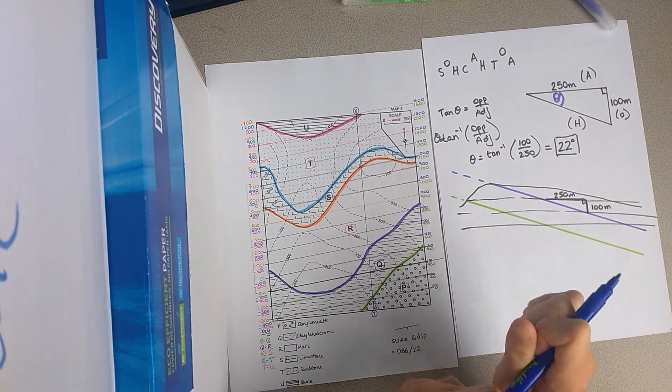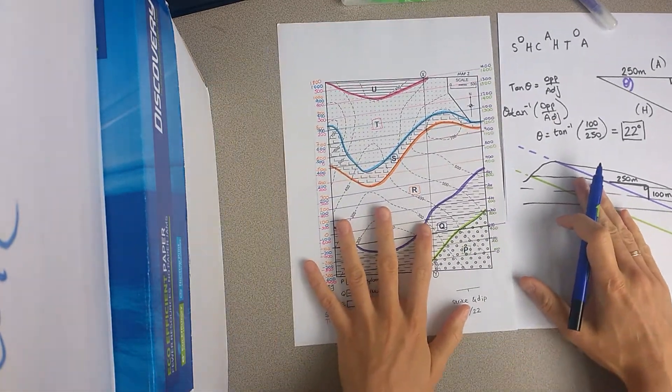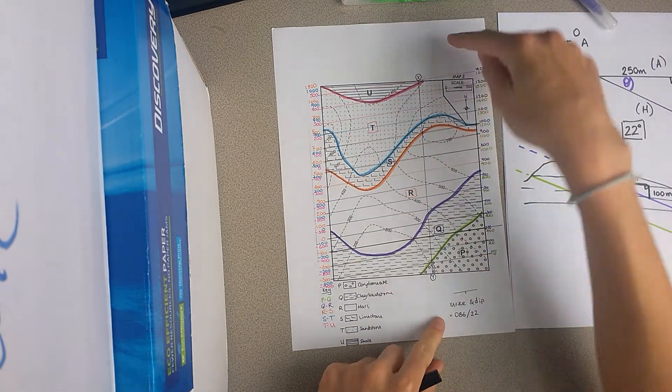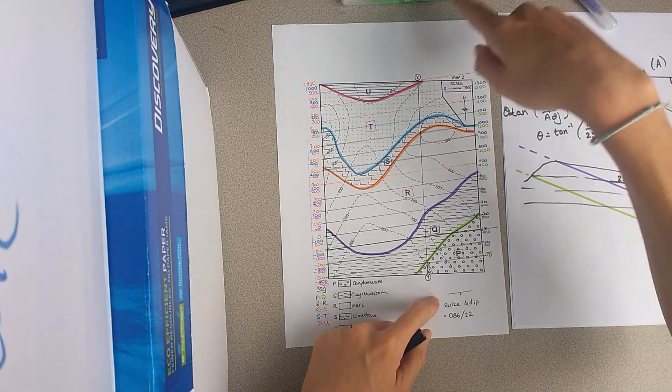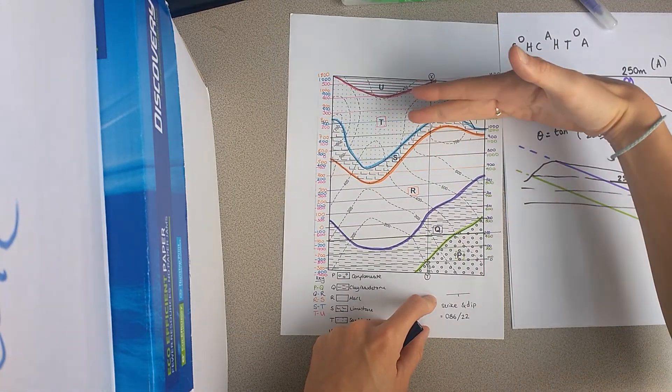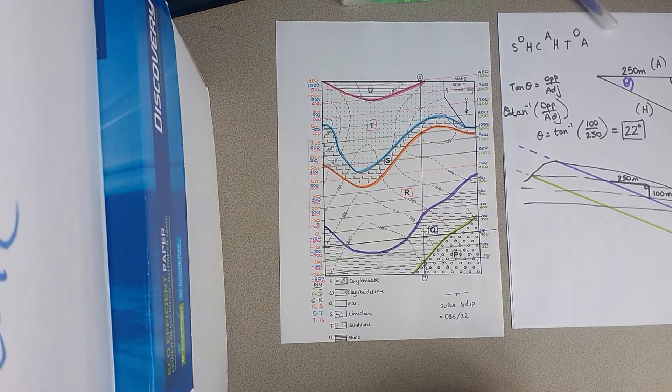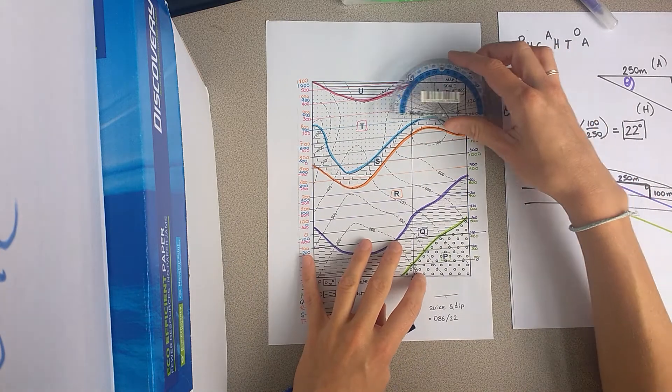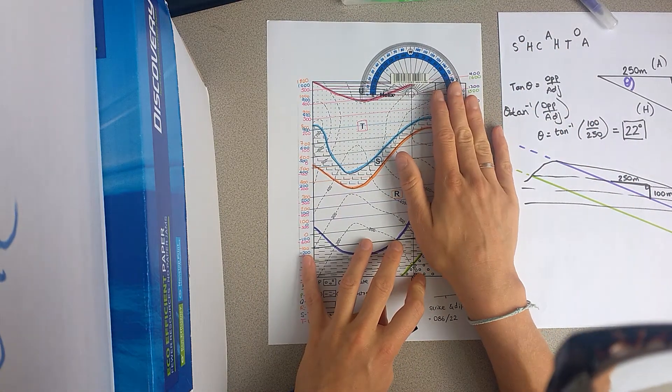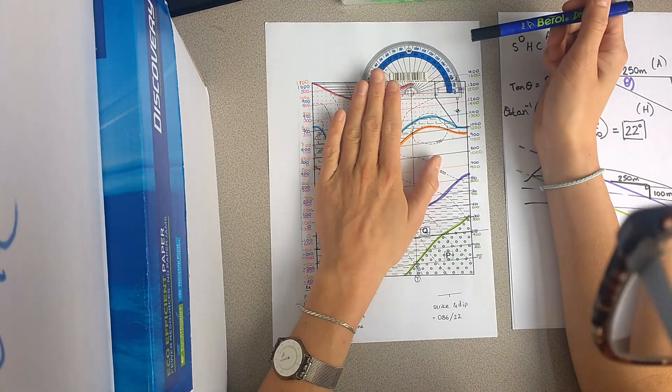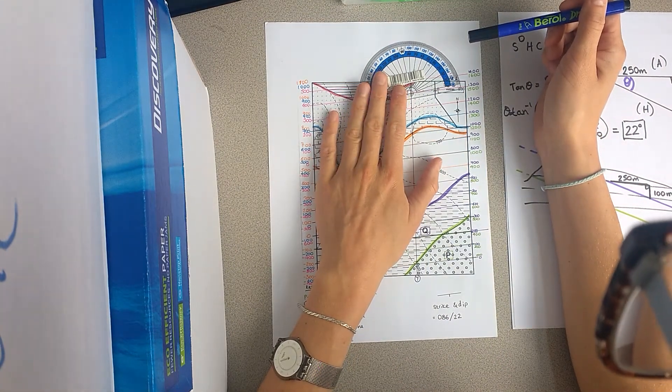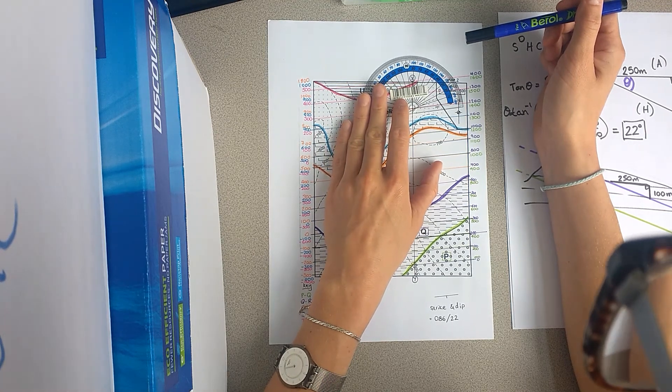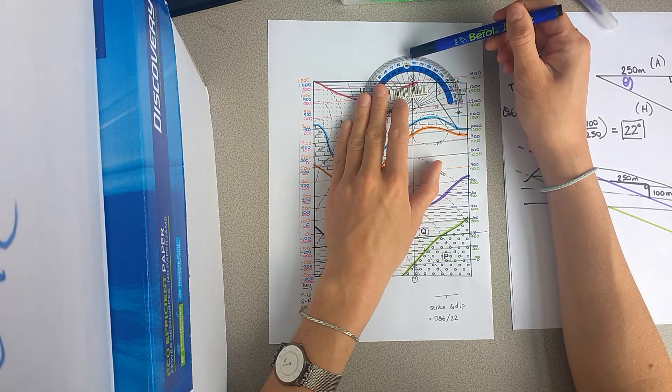And if we wanted to know what the strike is, then what we have to do is we have to look at the orientation of these lines. So, if north is at the top of the map, if we measure round from north to the orientation of these using a protractor, okay? So, if we measure from north around here, like this, you will see that these lines are at just over 80 degrees.